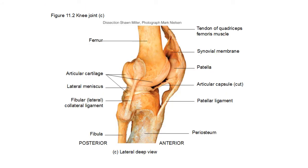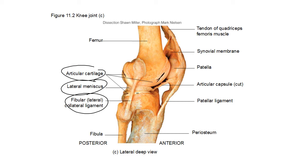Lateral view of the knee. Here's your fibula, so here's your fibular collateral ligament and lateral meniscus. Articular cartilage can be seen all around the knee — here, here, here, and here. Then the articular capsule, which has been cut away, provides the covering around the outside of the knee. The synovial membrane and other ligaments are all in there as well.